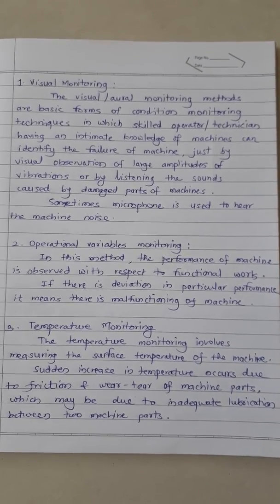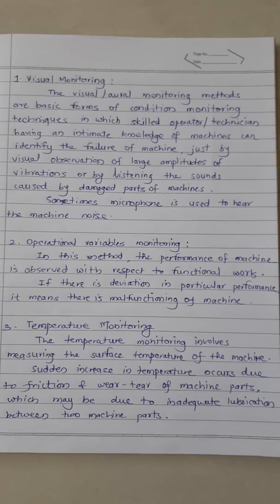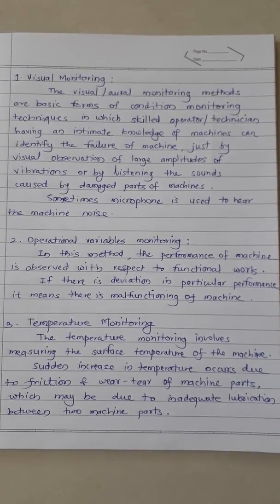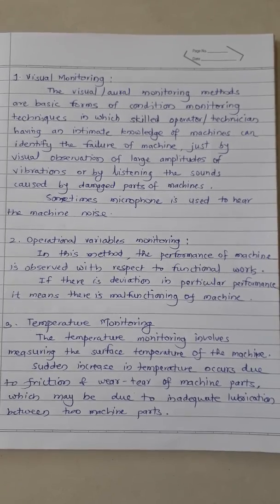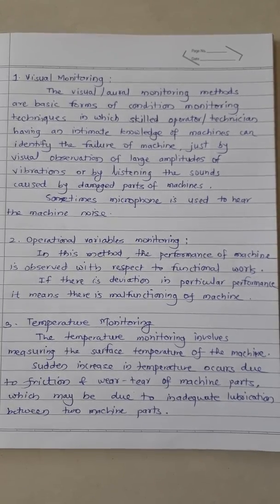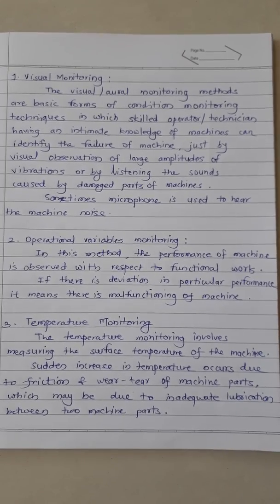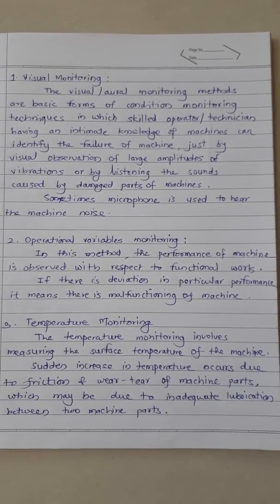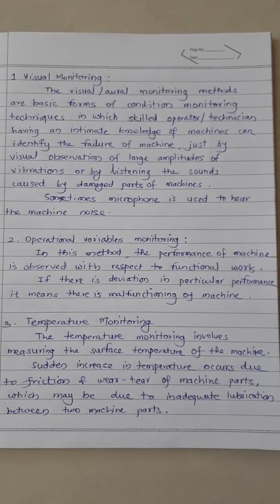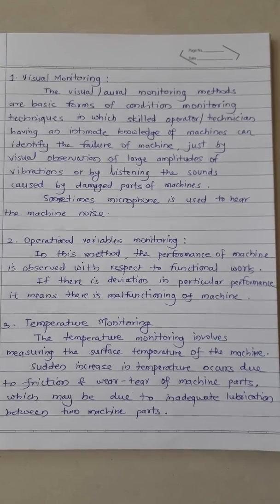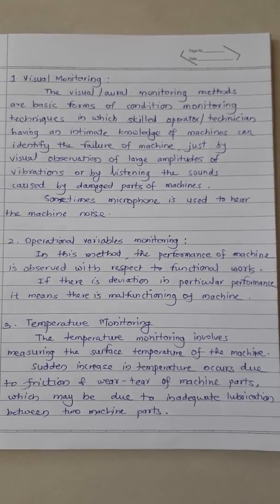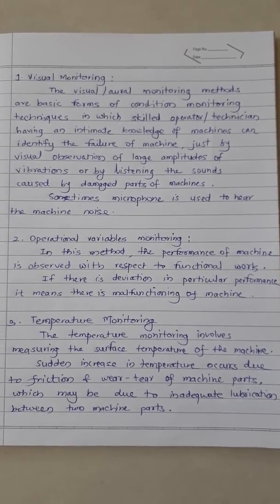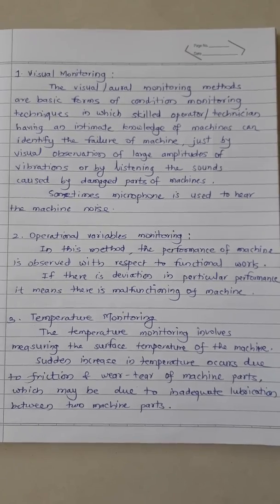Operational variables monitoring: in this method the performance of the machine is observed with respect to functional work. If there is deviation in particular performance, it means there is malfunctioning of parts of the machine. This is one technique used to determine machine performance.